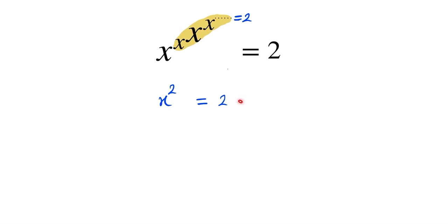So here now we take the square root on both sides. We do the square root on both sides, so here it can be written as square root of x squared is equal to square root of 2.